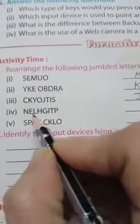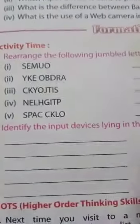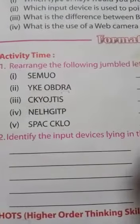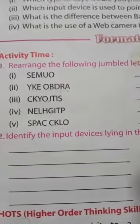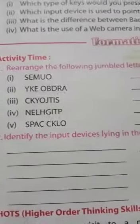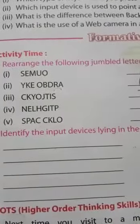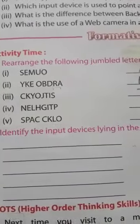Now fourth — what will the fourth one be? The answer is LIGHT PEN — L, I, G, H, T — LIGHT PEN.